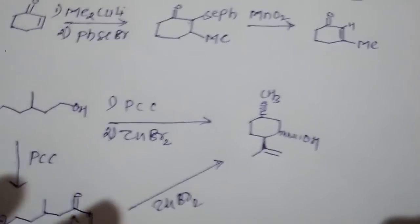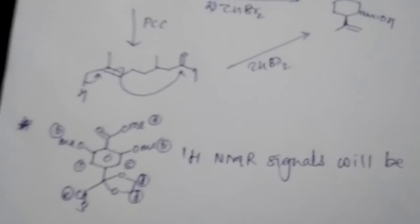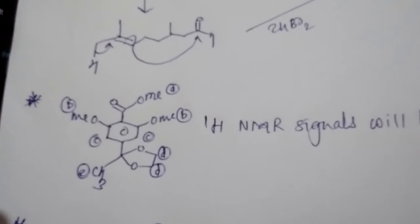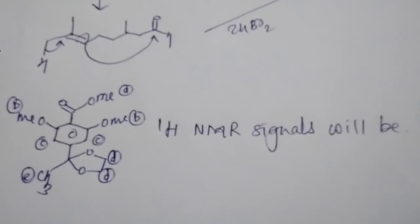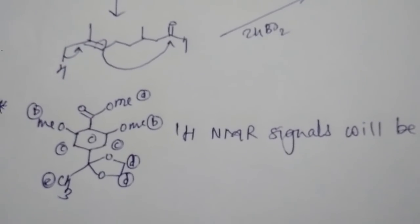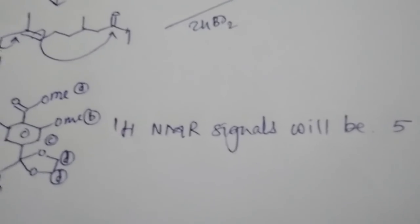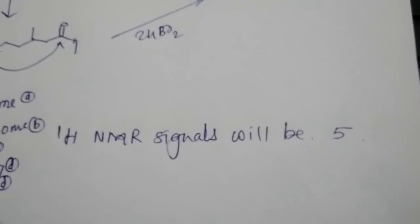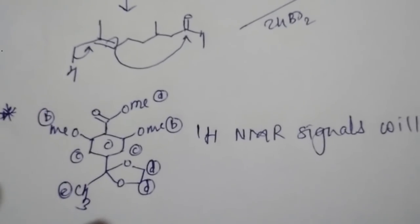For the next question, they have asked about 1H NMR signals. I have labeled each and every carbon-like protons, so there will be five different asymmetric protons which will appear in 1H NMR. So this five answer will be there. This is a numerical type question, so five will be the correct answer for this one.